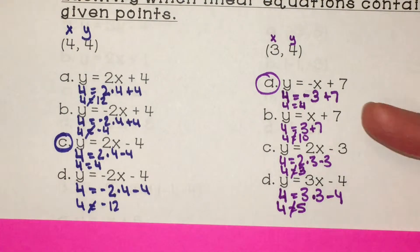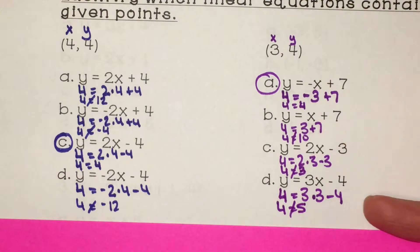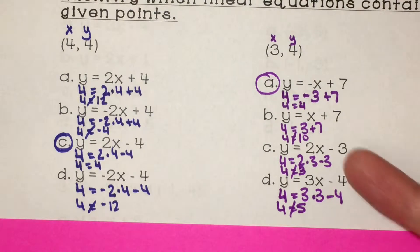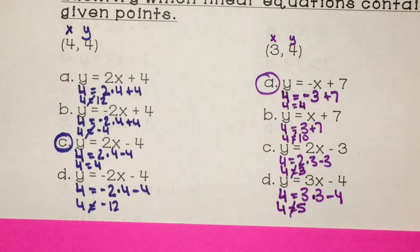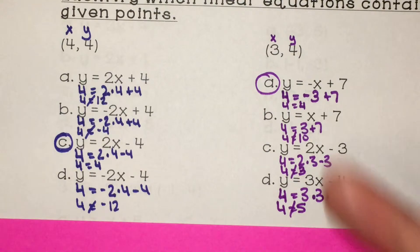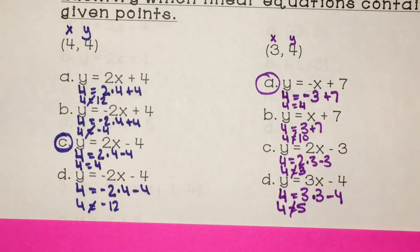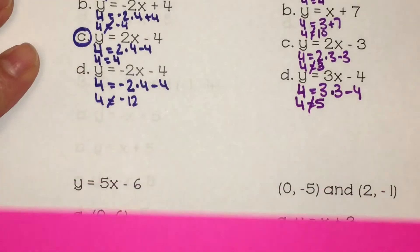It's good to go through and plug it into all of them because you could make a simple mathematical error and say the two sides are equal when they really weren't. So going through and double-checking yourself is a good idea.